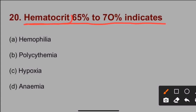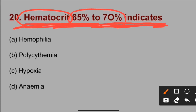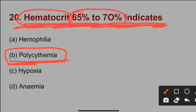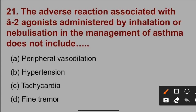Next question: Hematocrit 65 to 70 percent indicates what? Hematocrit is the percentage of red blood cells in blood. When hematocrit is 65 to 70 percent, it indicates polycythemia — meaning an excess of RBCs in the blood. When hematocrit is low, it is an indication of anemia.